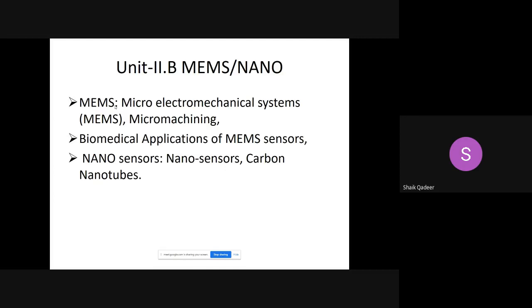When size is the object, we go for MEMS sensors or nanosensors. In this particular topic we see the fundamental things of MEMS sensors followed by one of the machining mechanisms, a few biomedical applications, then nanosensors is defined and one example of nanosensor is covered called carbon nanotube.